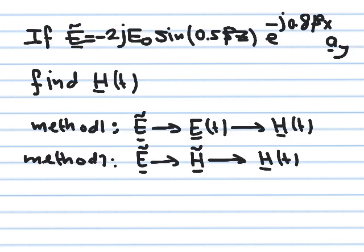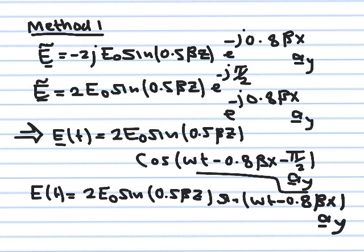We follow Method 1 first. We have the electric field as a phasor and need to convert it to a time domain quantity. The minus j factor is written using Euler's identity as e^(−jπ/2). So e^(−j) = e^(−jπ/2) and j = e^(jπ/2).